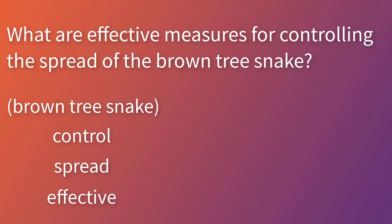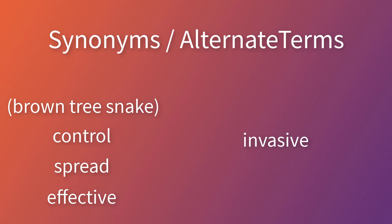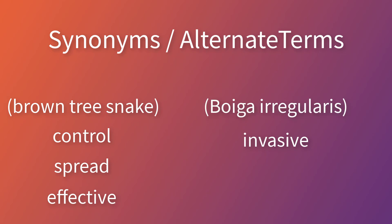Since our focus is on the brown tree snake as an invasive species, we can also use invasive as a keyword. Most library databases will search for the exact words you enter, so it's important to consider synonyms and alternate terms that describe the same concept. Boiga irregularis is the scientific name for the brown tree snake, and invasion is another term for invasive.